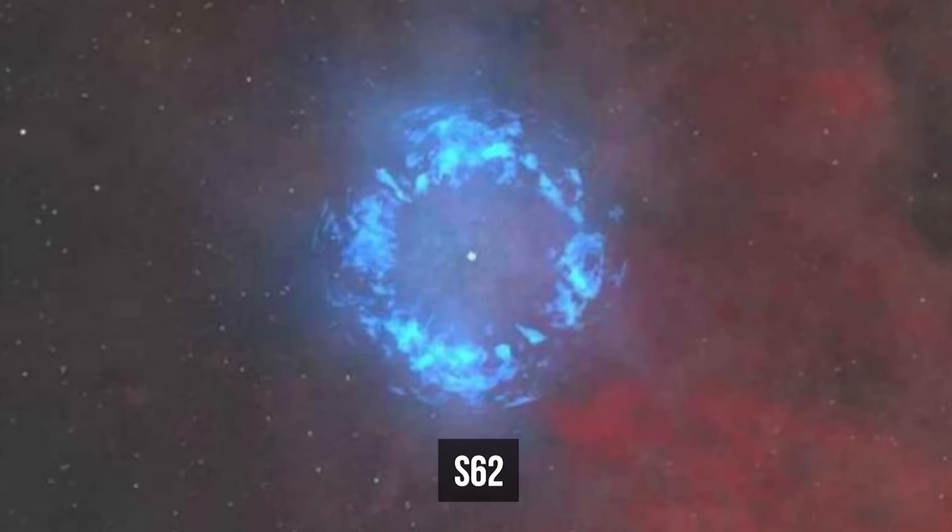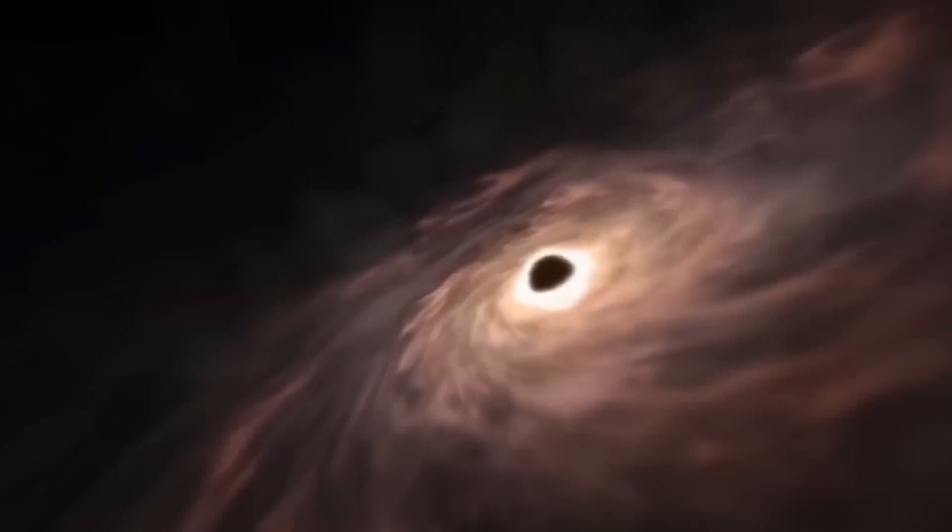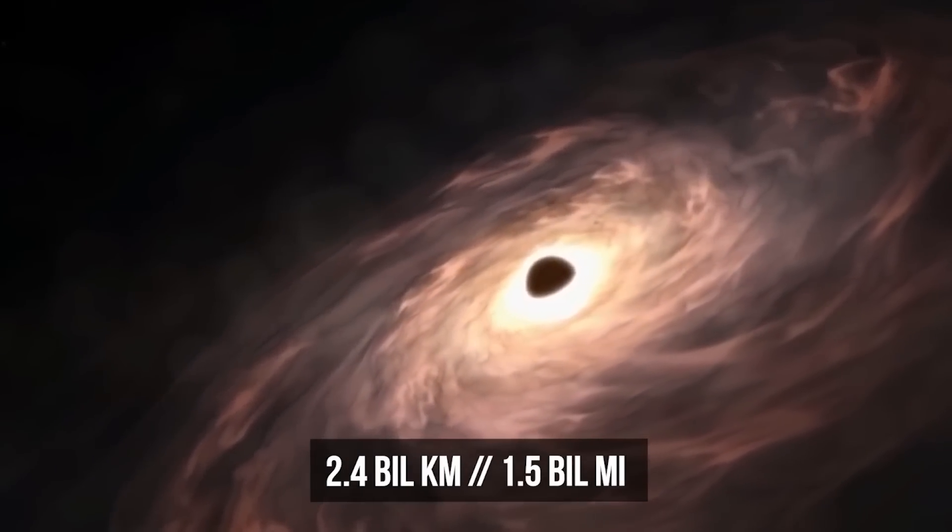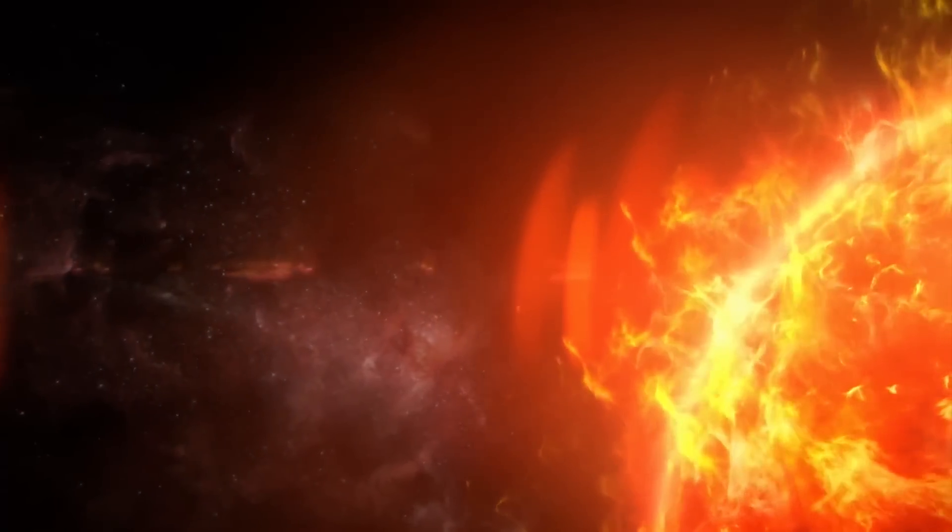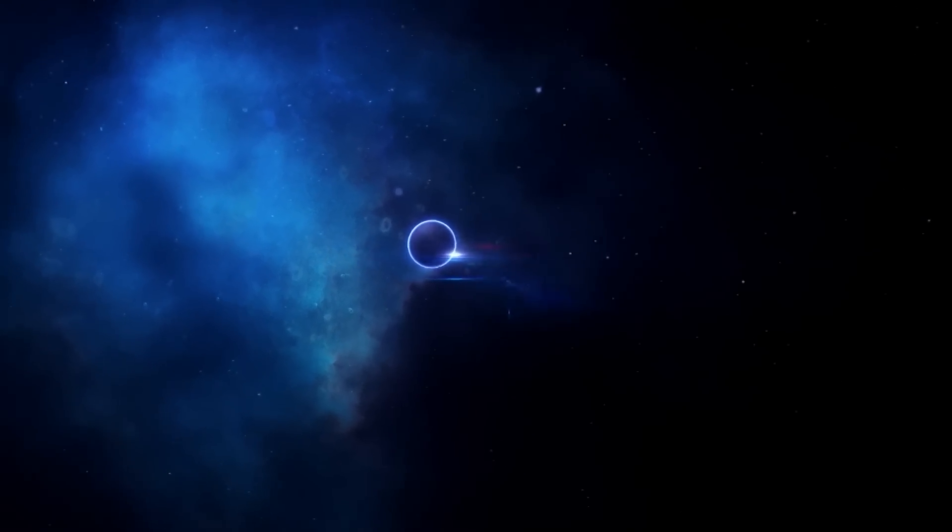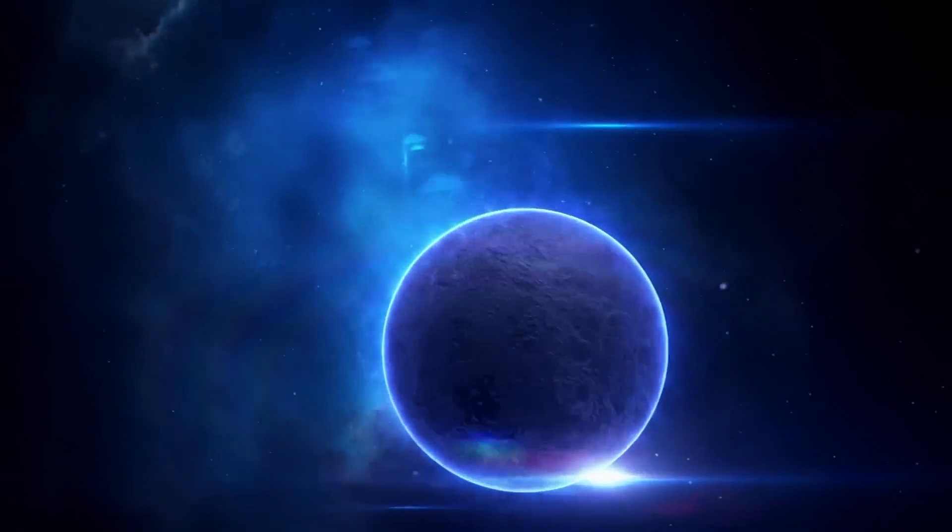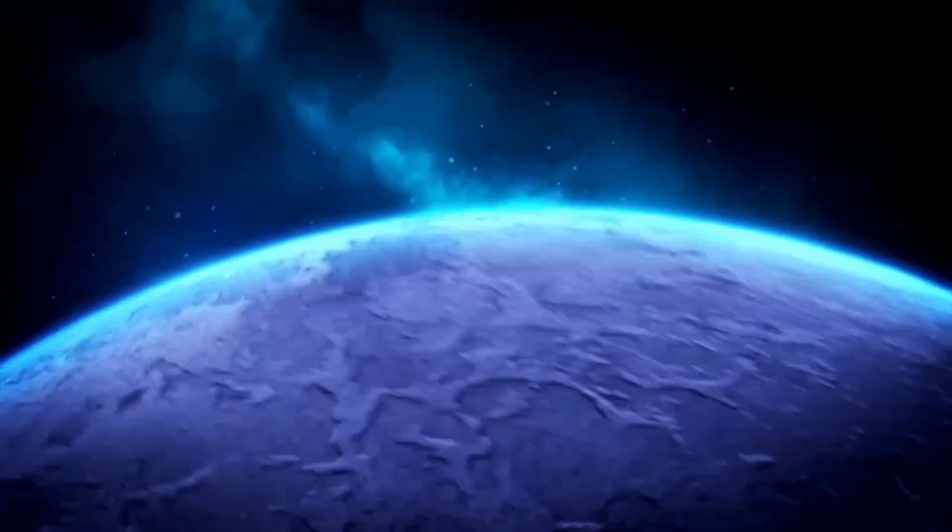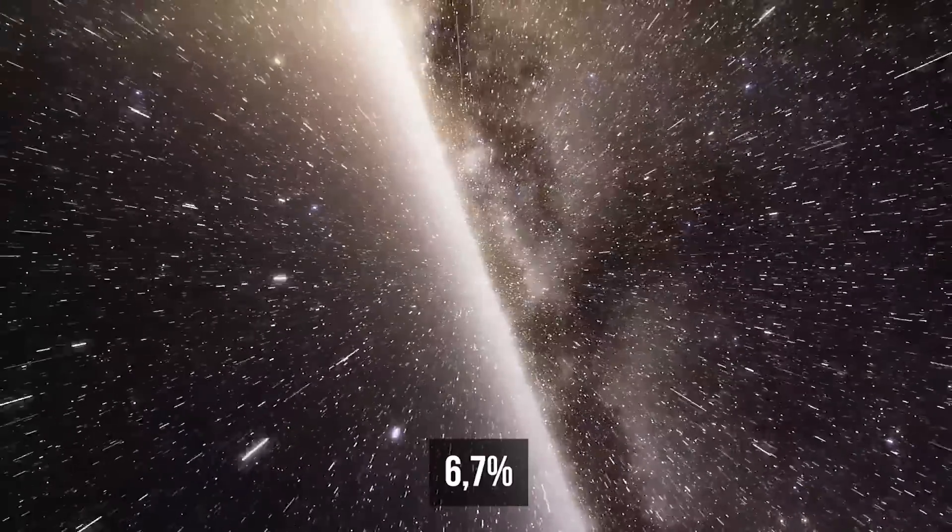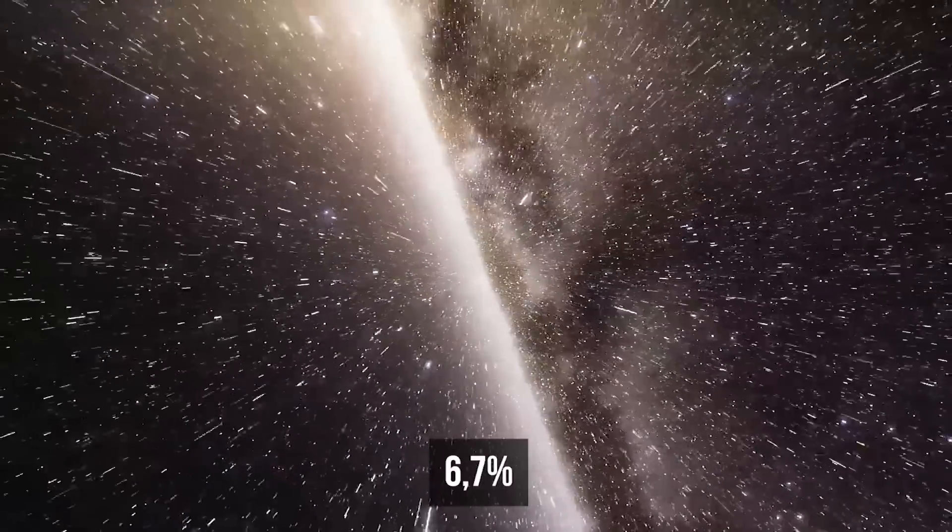It waves hello to a supermassive black hole from a distance of just 2.4 billion kilometers. That's less than the gap between the Sun and Uranus. S6-2 was thought to be the fastest star in our galaxy. The black hole's gravity makes its speed up to 20,000 kilometers per second, which is 6.7% of the speed of light.